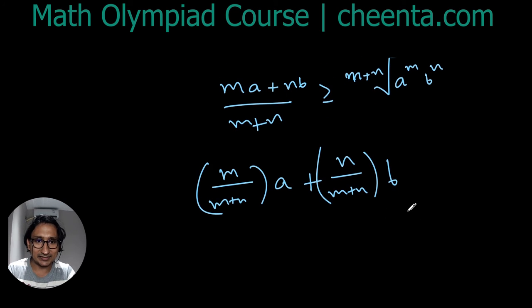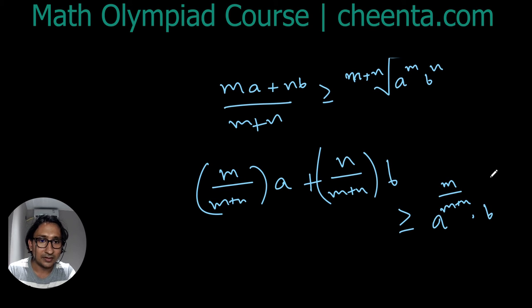And that can be easily written as a^(m/(m+n)) times b^(n/(m+n)).